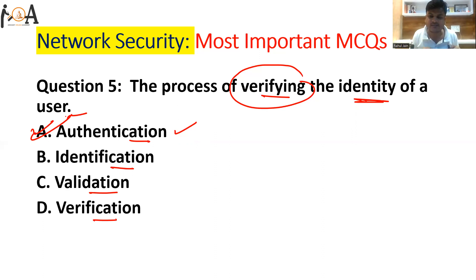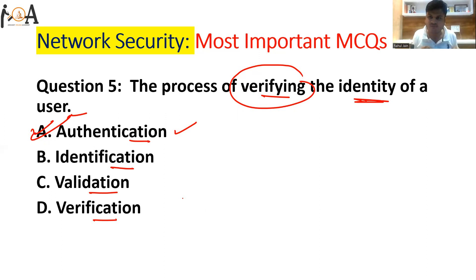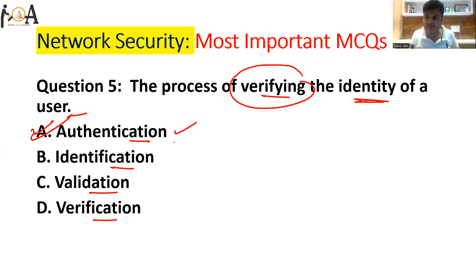Identification simply means to recognize that person, but it is not verification. Validation means checking whether a valid user is accessing the database or not. Verification and identification together lead to authentication — verification comes after validation, and after verification, that person will be authenticated.